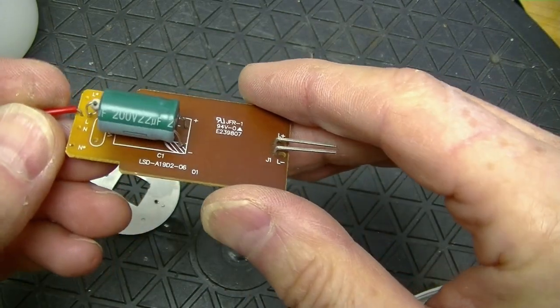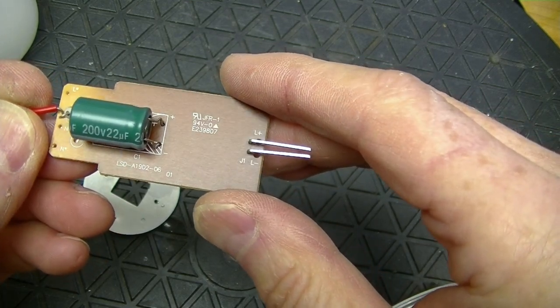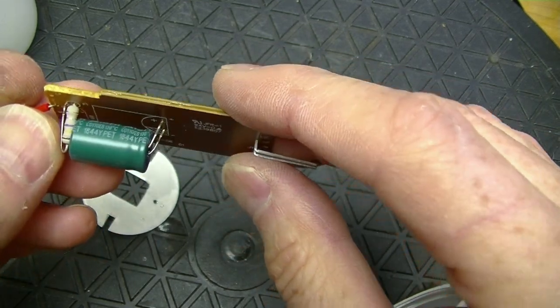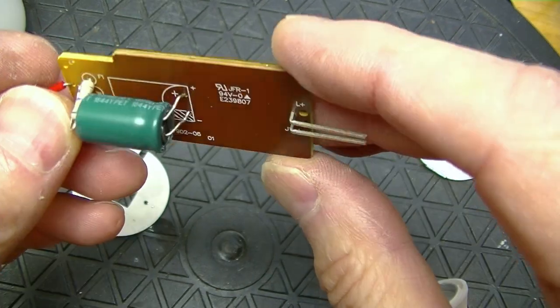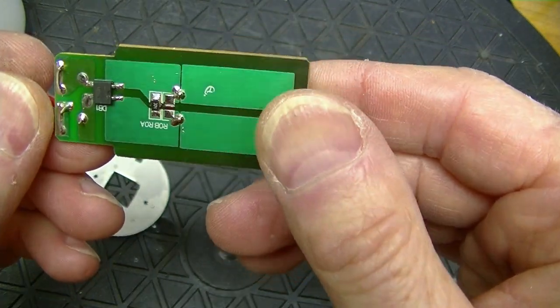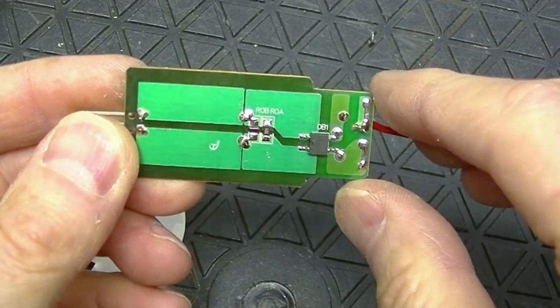What's on this board? There's a capacitor, 200 volt, 22 microfarad. A resistor, 0.47 ohms. And there is a bridge rectifier on the bottom, and a resistor on the bottom.